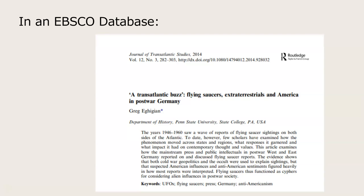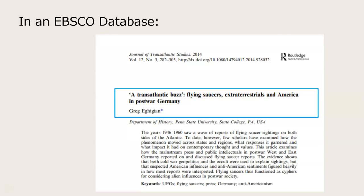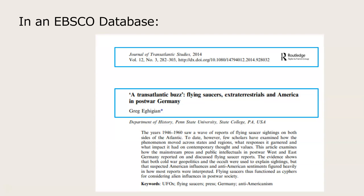Now, if you're using an EBSCO database, another way to find the information might be in the PDF of the article. Here you can find the same information — the author's name and article title, and the journal title with volume, issue number, and publication date. This article also gives us a digital object identifier, or DOI — that's the permanent link for this article.